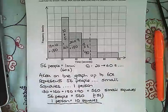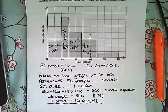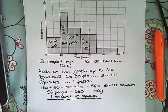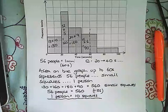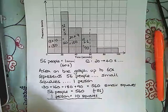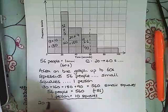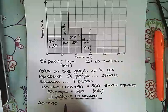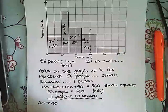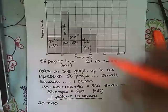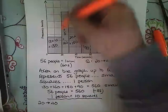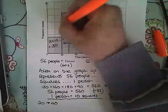Then we can use that information to work out how many people are between the 20 and 40 second time gap. For 20 to 40 seconds, we are going to count up the number of small squares, and it's useful if you can to just highlight the area you're going to use.